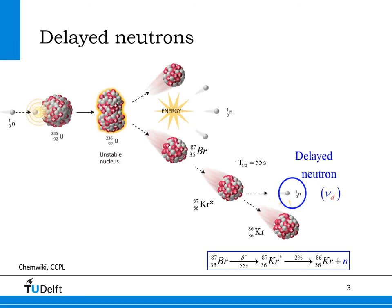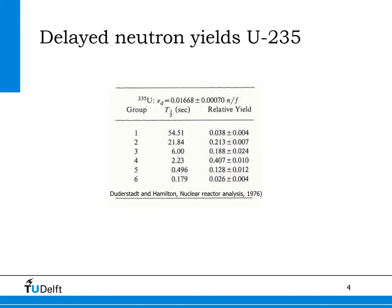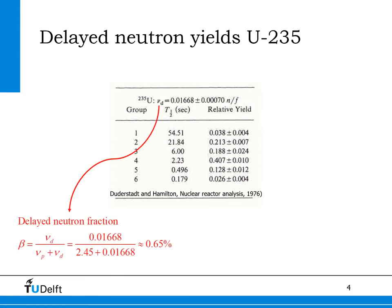Fission products that emit a neutron in the decay chain are called precursors. By definition, each precursor atom emits one delayed neutron in the decay chain. The number of delayed neutrons in the fission process of uranium-235 equals on average about 0.017, which is a very small number compared to the number of prompt neutrons of about 2.45. The fraction of delayed neutrons of uranium-235 is only 0.65%, as shown in red on the slide.